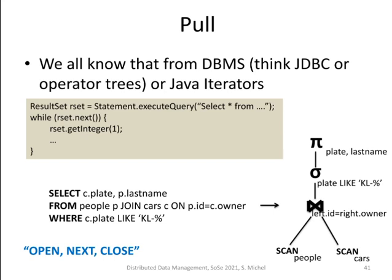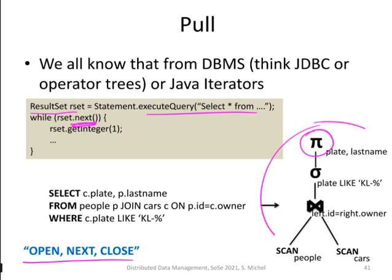You have likely worked with a pull-operated tree already. If you execute a query in JDBC, you obtain a result set and then call the next method on it to retrieve the next result. This is a good example of an operator tree where every operator implements a so-called open-next-close interface. Open instantiates the processing, while the next method pulls result tuples to the top operator.